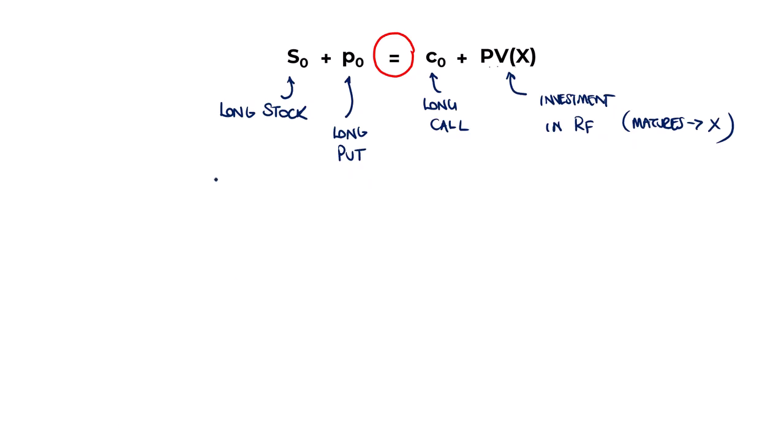The whole point here is that it can be shown that the long stock and the long put together, known as a protective put, put them together, it can be shown that their payoff will always be equal to the payoff on the call and PV(X), known as a fiduciary call. The payoff on the left-hand side is always equal to the payoff on the right. They're not always equal to the same number, but they're always equal to each other. That means in substance, economically, effectively, both sides represent the same asset. They're going to pay off the same. And if that's the case, they must, they absolutely must cost the same. If they don't, you could make arbitrage gains.